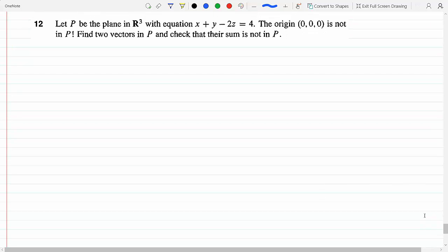Let P be a plane in R³ with equation x + y - 2z = 4. The origin is not in P because if you plug in (0,0,0) for x, y, z you get 0 equals 4, that's a false statement. So this plane does not include the origin. It says find two vectors in P and check that their sum is not in P.